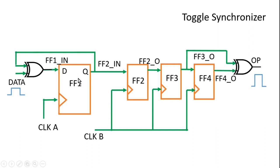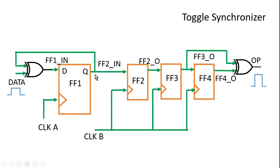Let me explain how. The output of flip-flop 1 is 1. As soon as the next pulse comes on the data signal, both inputs of the XOR gate become 1, so its output becomes 0. On the positive edge of clock A, this 0 is transferred to flip-flop 1 and Q becomes 0. Immediately, the XOR gate output goes to 1, but by the time the next clock A edge arrives, the data pulse has ended, so both inputs are 0, output is 0, and flip-flop 1 output remains constant at logic 0.